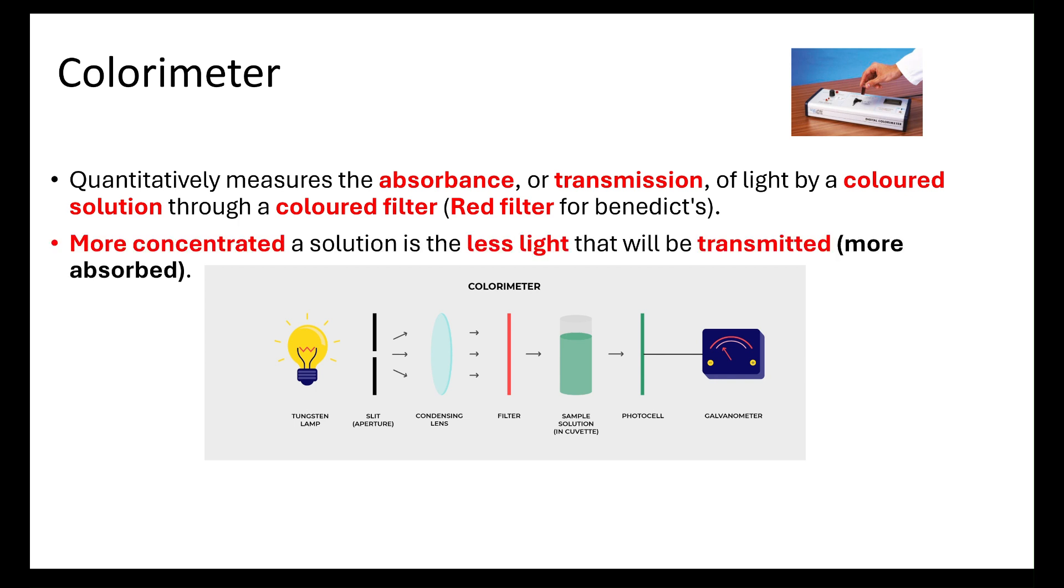It's important that when you use a colorimeter and you're doing a Benedict's test, you want to use a red filter. The colored filter must be appropriate for the solution you're using. The more concentrated a solution is, the less light will be transmitted through, therefore more will be absorbed. The light can either be absorbed by the solution or transmitted through. When you take a reading from your colorimeter, you will either be told the transmitted light or the percentage absorbance.